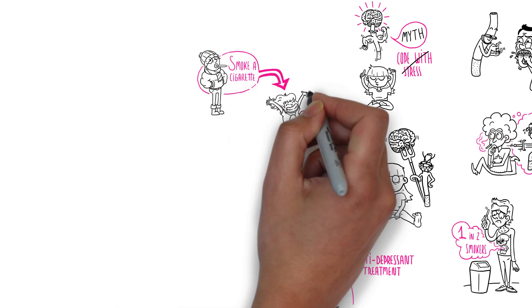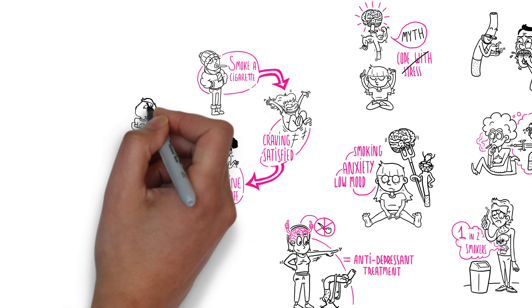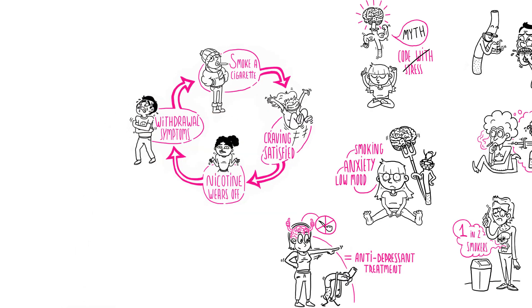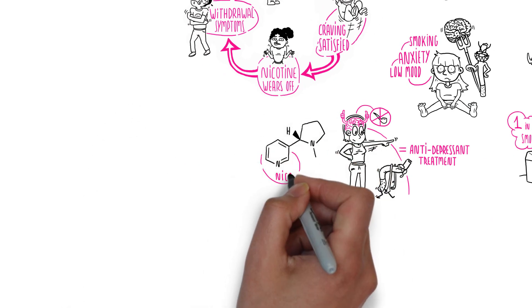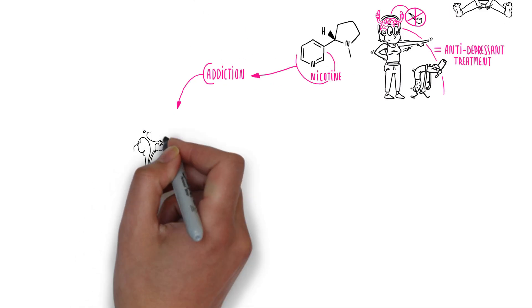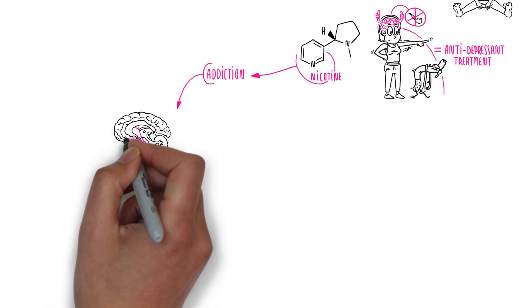This can be explained through what is known as a tobacco addiction cycle. Nicotine is the addictive ingredient in tobacco and what causes addiction through its effects on the brain, which we experience as pleasurable and rewarding.